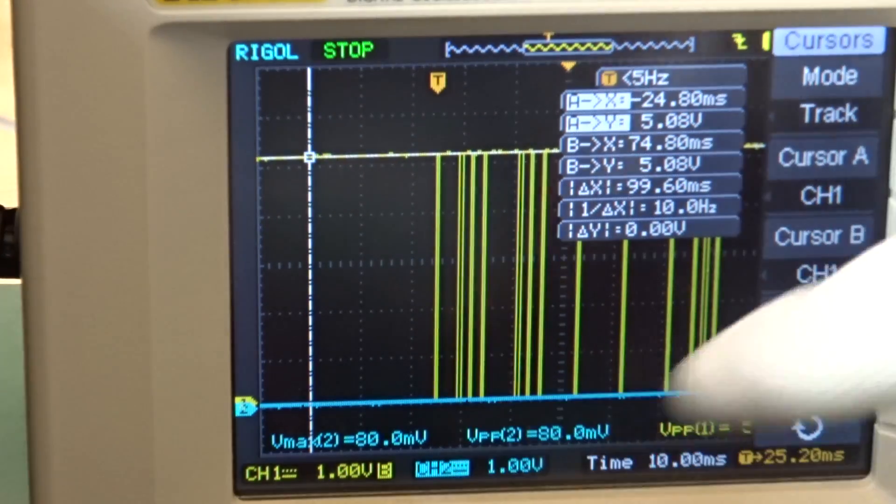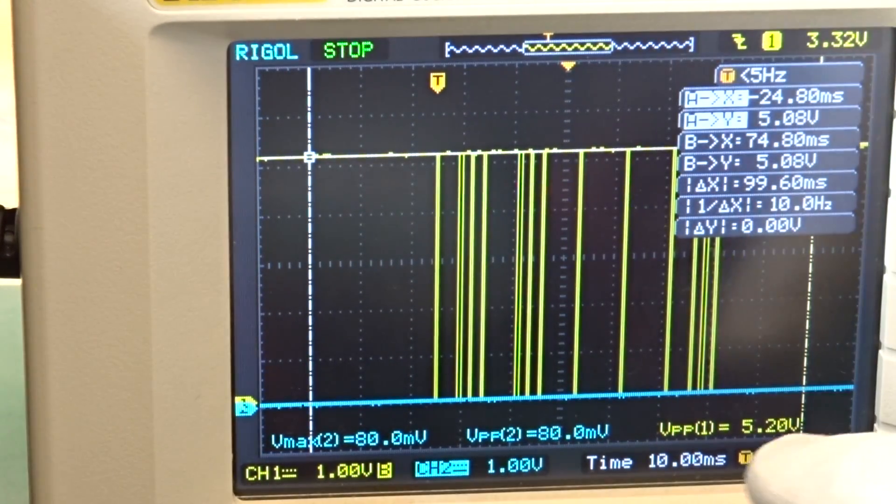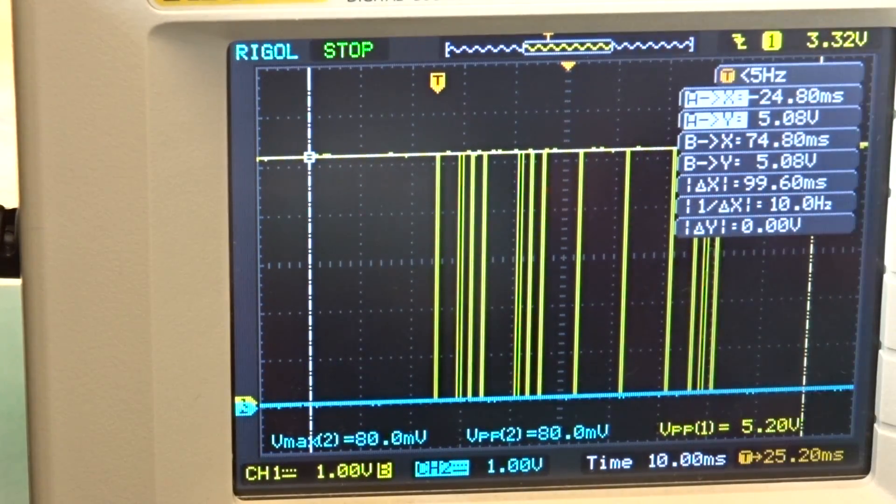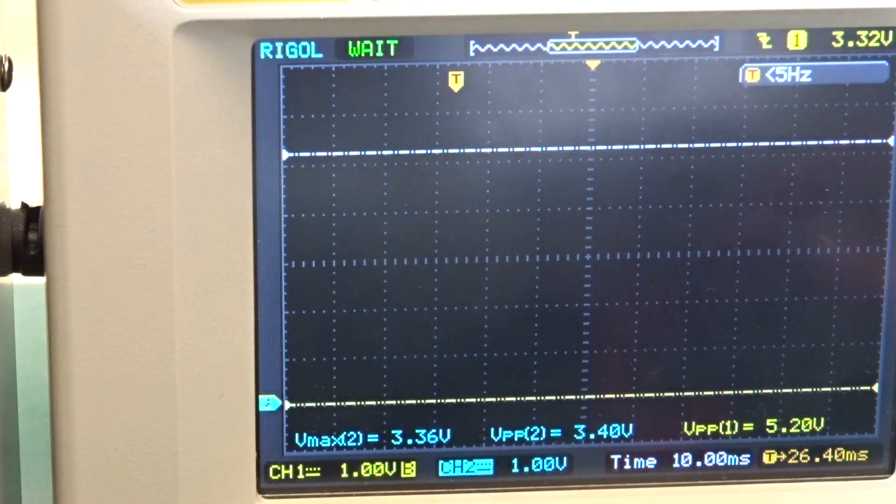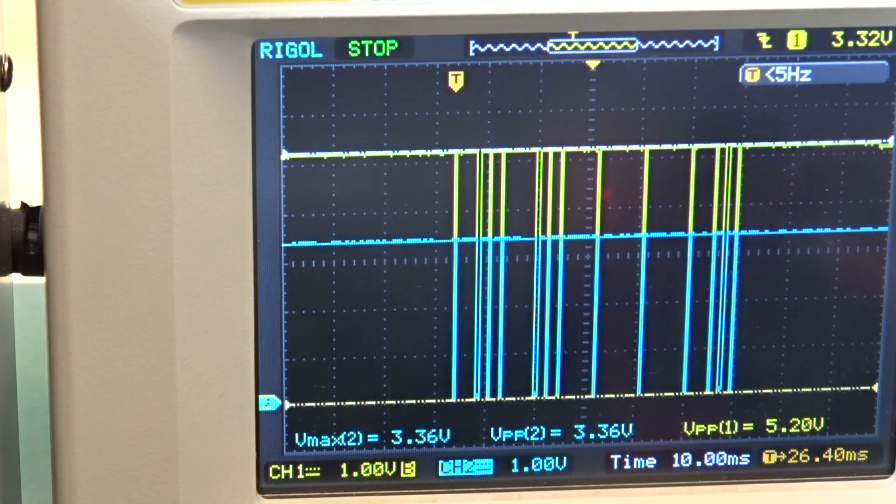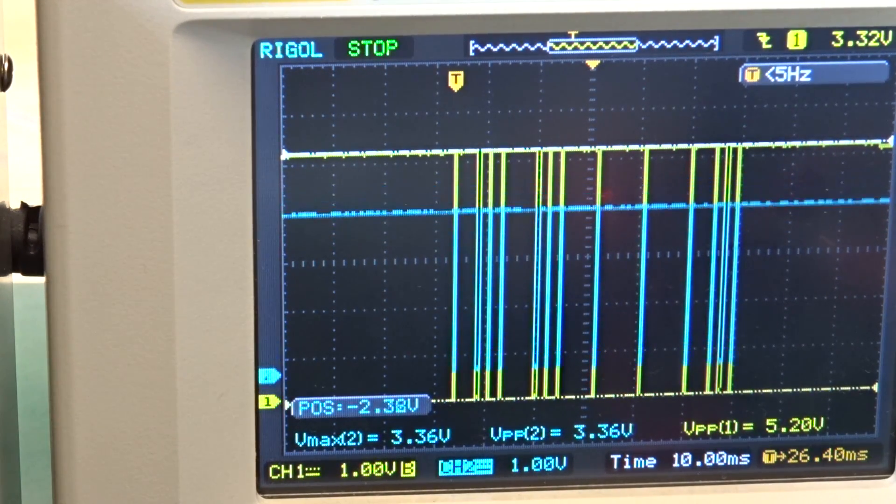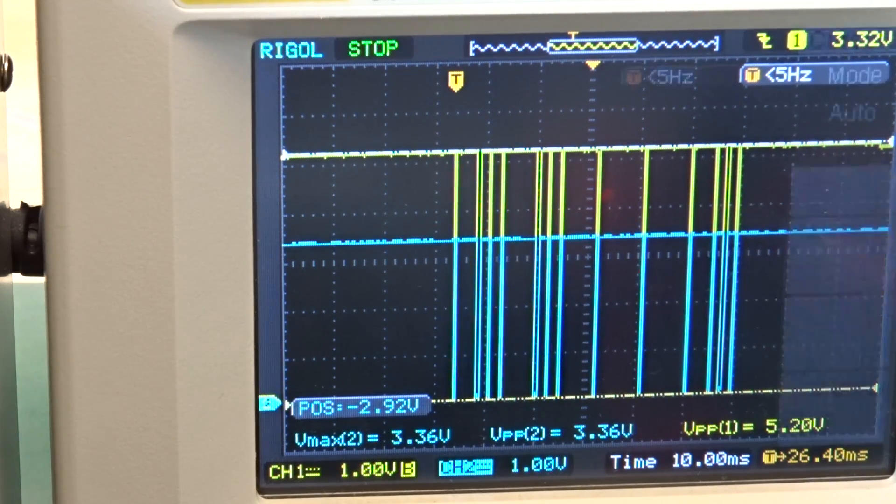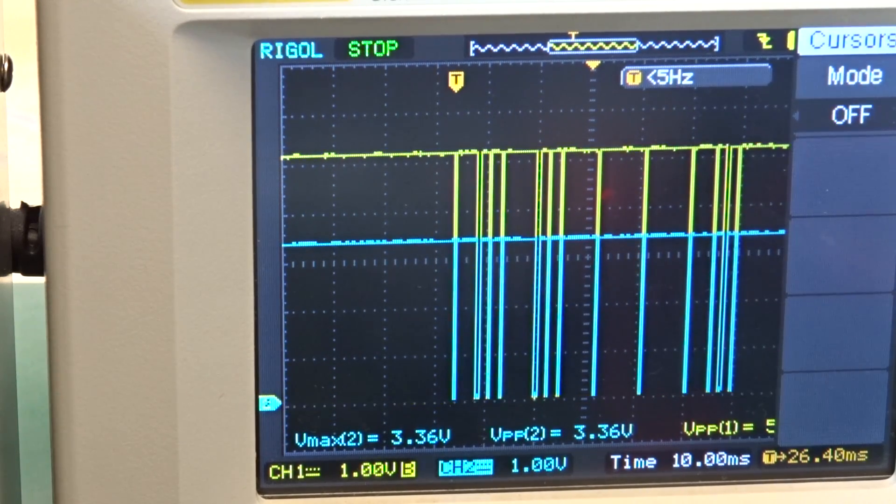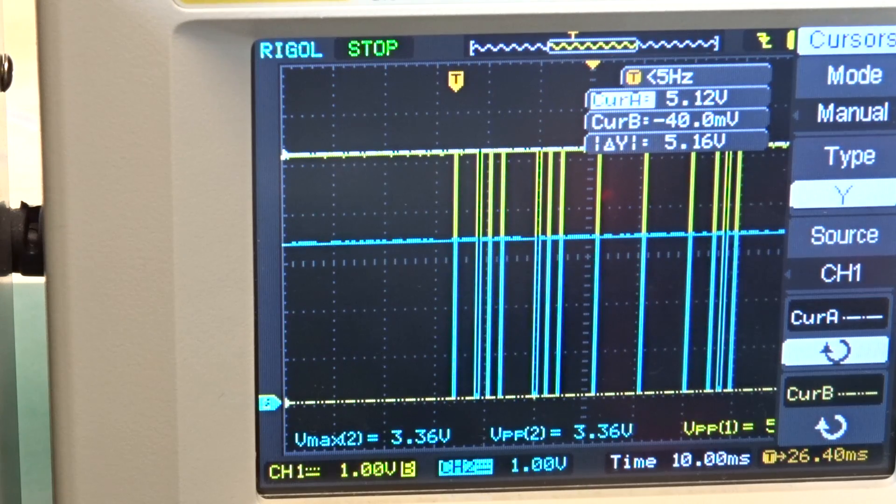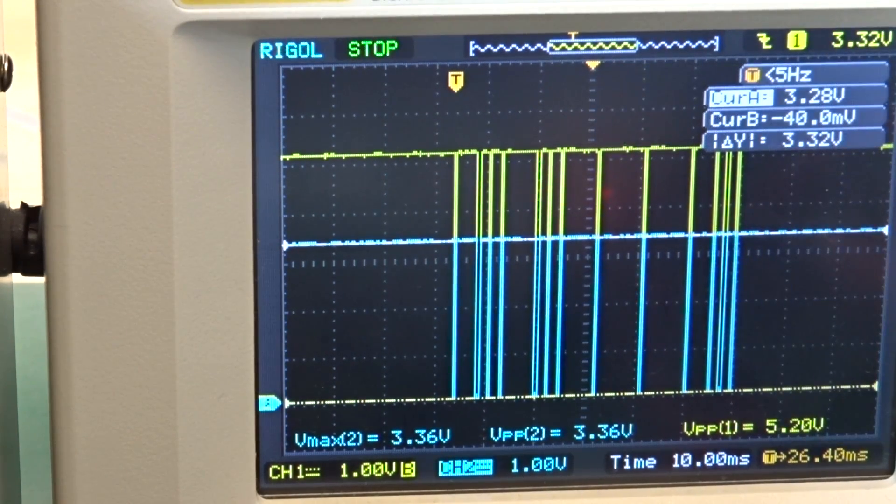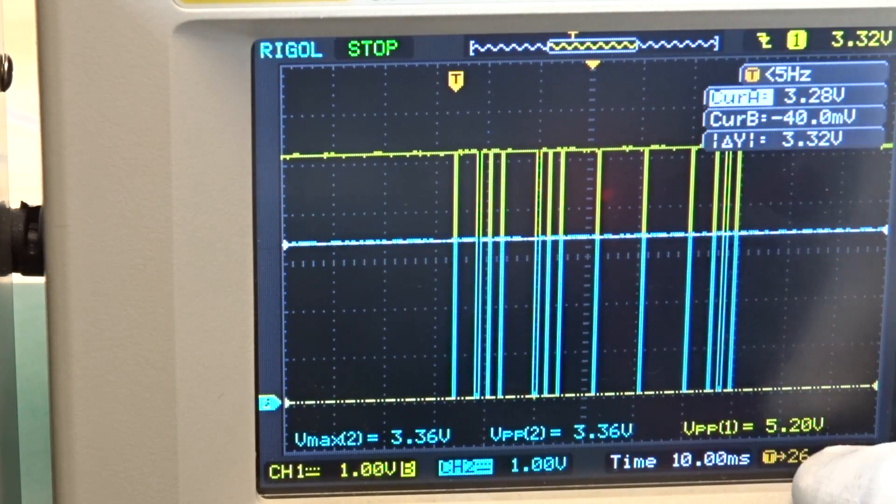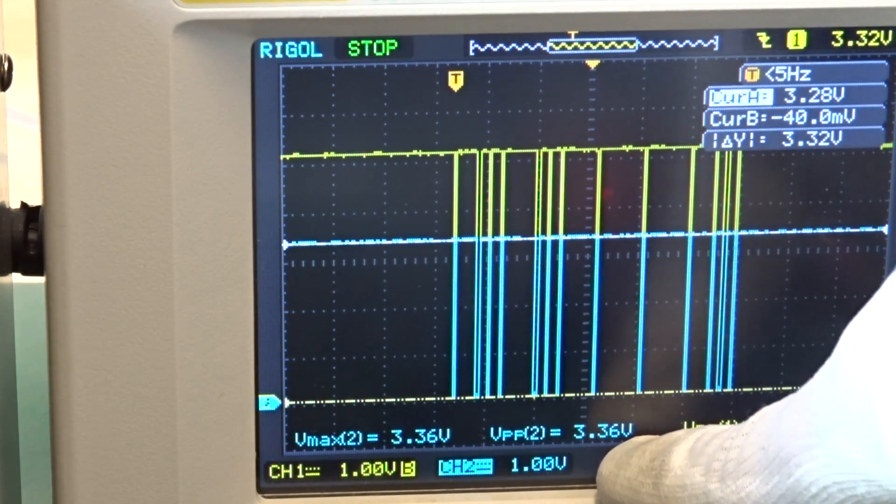and if we now add the level shifter to the second channel and do the same measurement again then we see that on the first channel the yellow line follows the five volt rail and the blue line the second channel follows the 3.3 volt rail and we see both signals follow with the same pattern but with different voltage levels so we have channel one with five volt peak to peak approximately and channel two with 3.3 volt